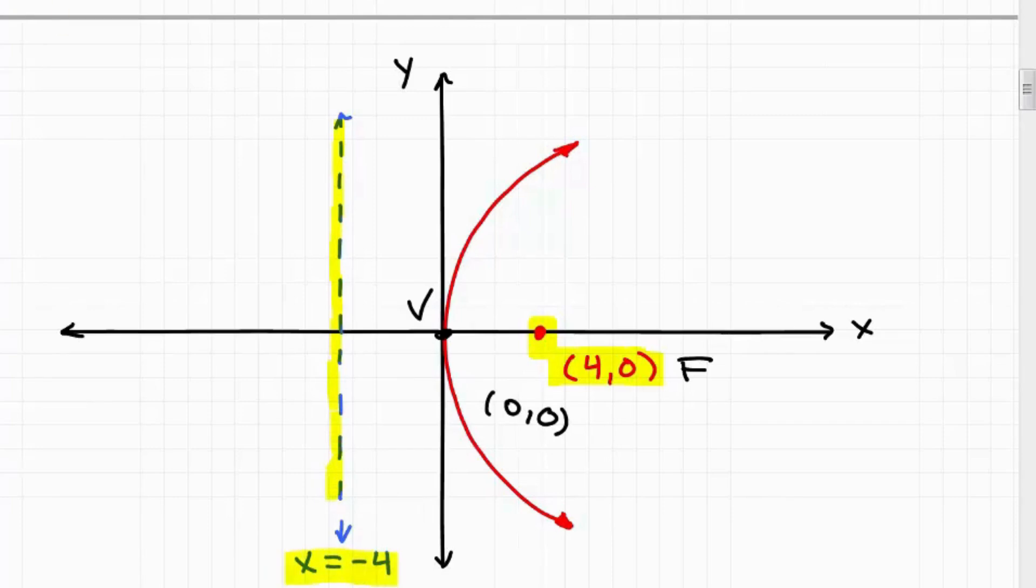So knowing this, I can see that I'm going to have a horizontal axis parabola. This is the axis because the focus and the vertex are on the same line. And so the parabola is going to be symmetric. In other words, this side is going to be the mirror image of this side, and this is what you have.